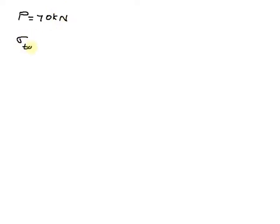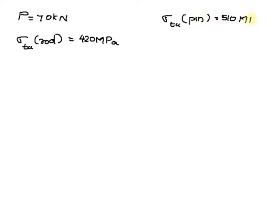Hi! Given the following data: load P is equal to 70 kilo Newton, sigma tensile strength of rod is equal to 420 mega Pascal, sigma tensile strength of pin is equal to 510 mega Pascal, shearing stress is equal to 396 mega Pascal, and the factor of safety FS is equal to 6. We are asked to design a knuckle pin.